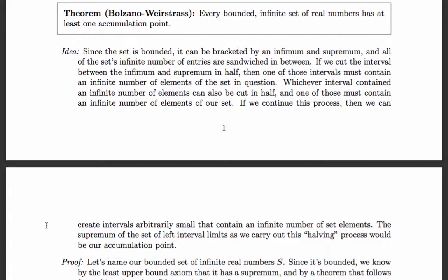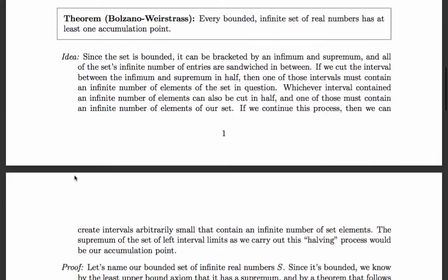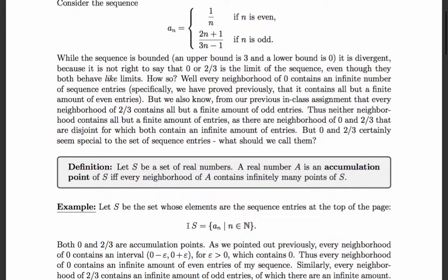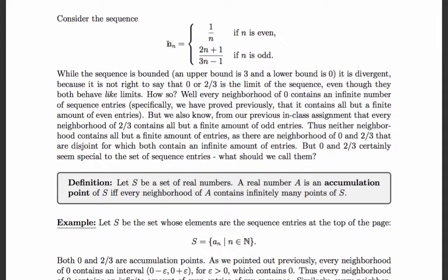The next subject is the Bolzano-Weierstrass theorem, which says every bounded infinite set of real numbers has at least one accumulation point. Now, if this is true — and it is, because it says theorem, and we're going to prove it — Bolzano-Weierstrass actually implies that our set must have at least one accumulation point, and in fact we've proved it has two: specifically 0 and 2/3. We can say it has at least one because this set is bounded — every entry is positive so it's bounded below by 0, the even entries are bounded above by 1, and the odd entries must be less than 3.